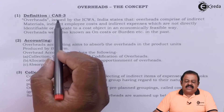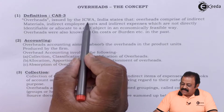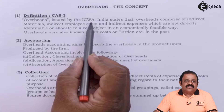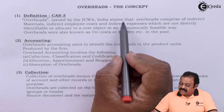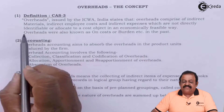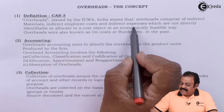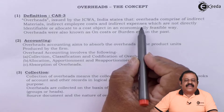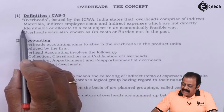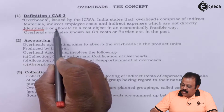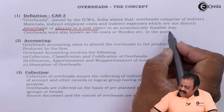According to Costing Accounting Standard 3, overheads issued by the ICWA — Institute of Cost and Works Accountants, that is Cost and Management Accountants India — states that overheads comprise of indirect materials, indirect employee cost, and indirect expenses which we cannot directly attribute to any particular product, which are not directly identifiable or allocable to a cost object in an economically feasible way.